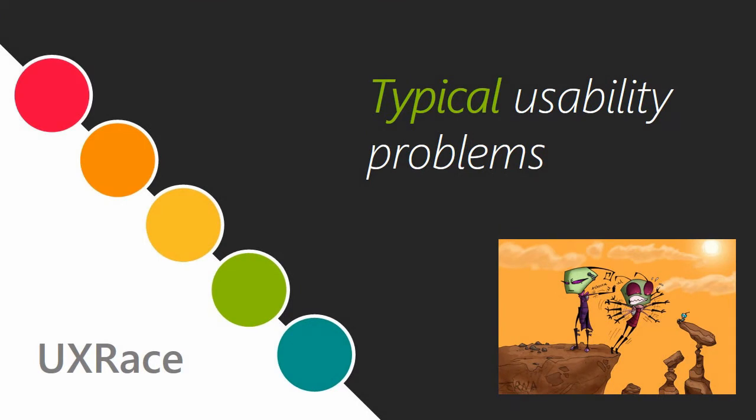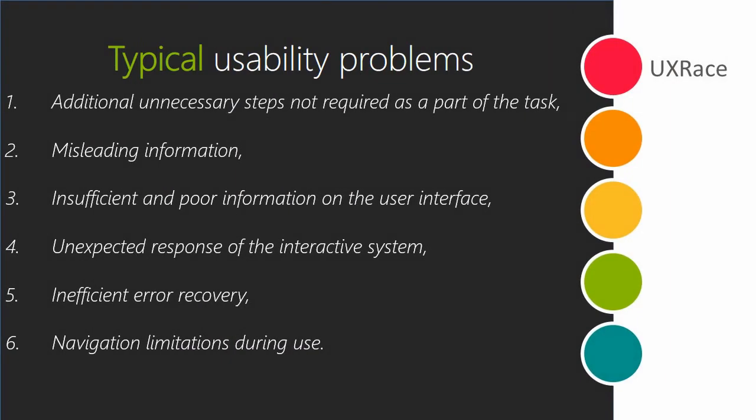Let's start with typical usability problems. The first usability problem is unnecessary steps not required as a part of the task. Imagine that you are going to download some free of charge content, you have just pressed the big 'download for free' button, and now you see the invitation to enter your credit card details — just in case. And in this case, this is an unnecessary step.